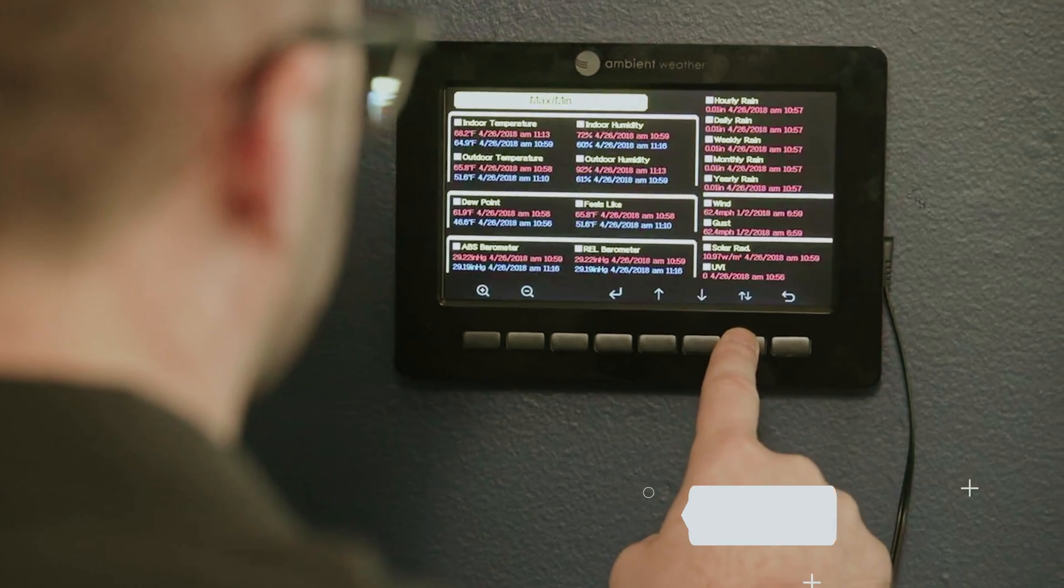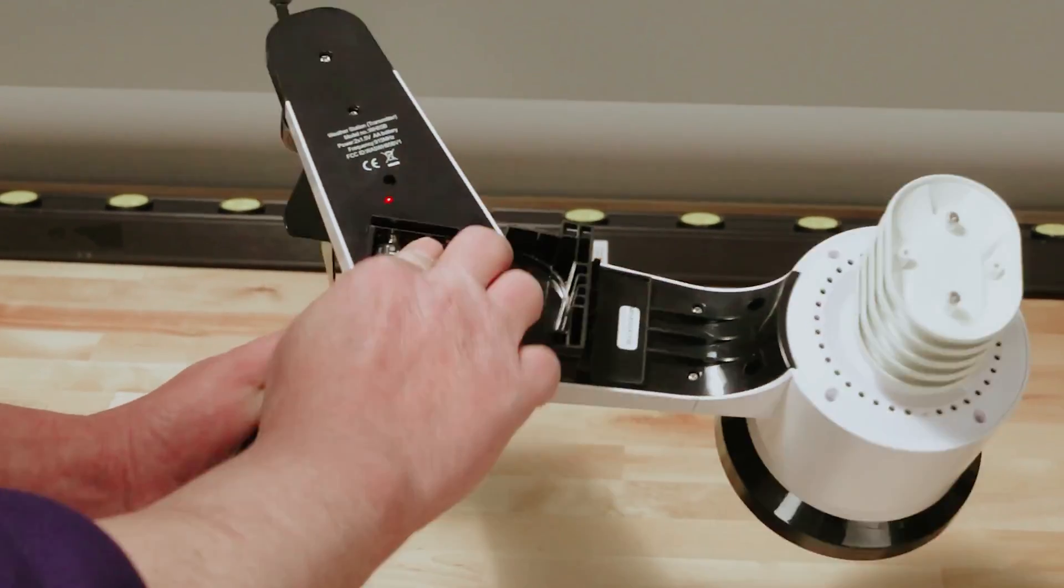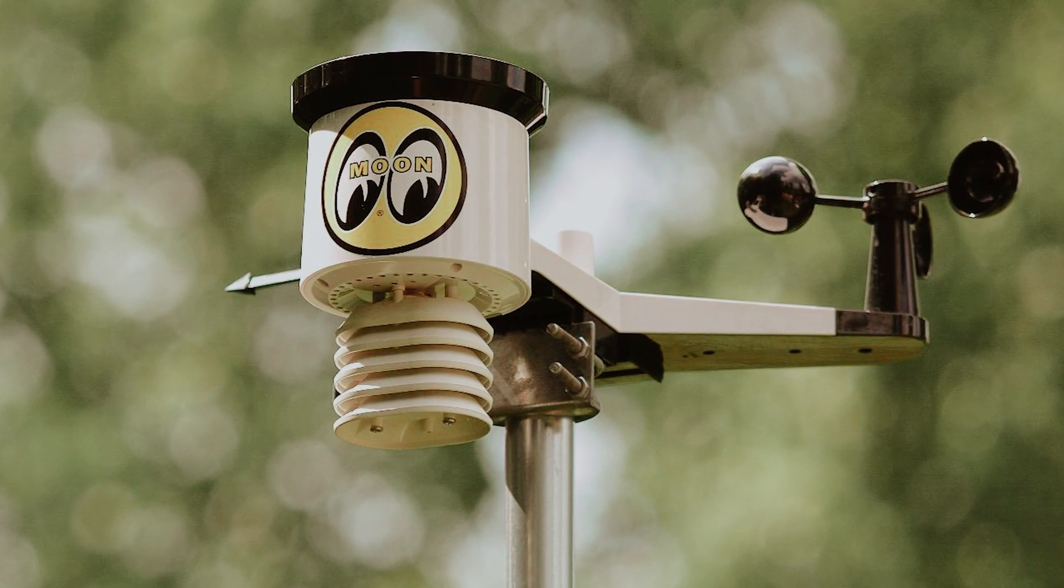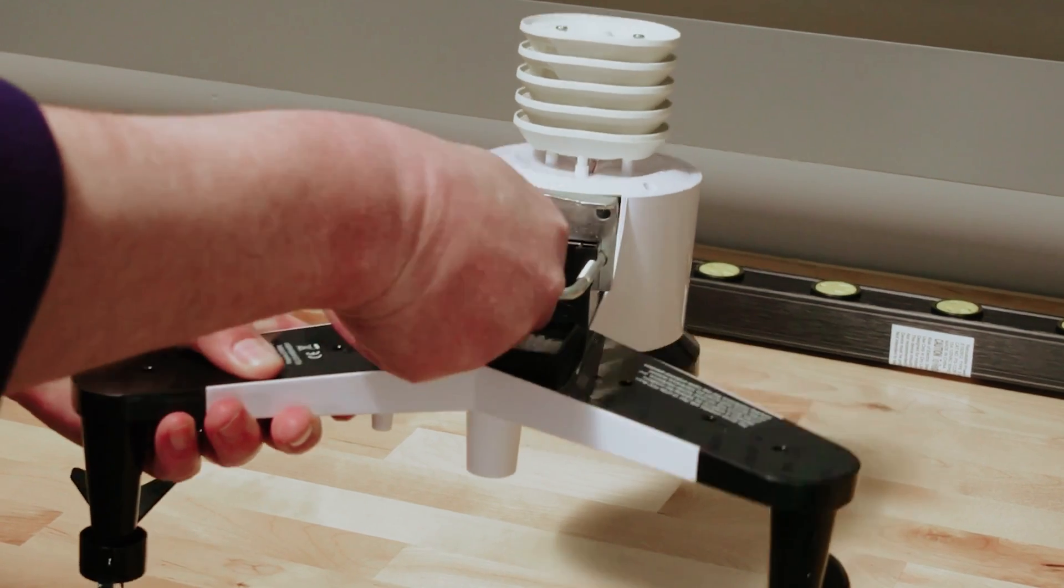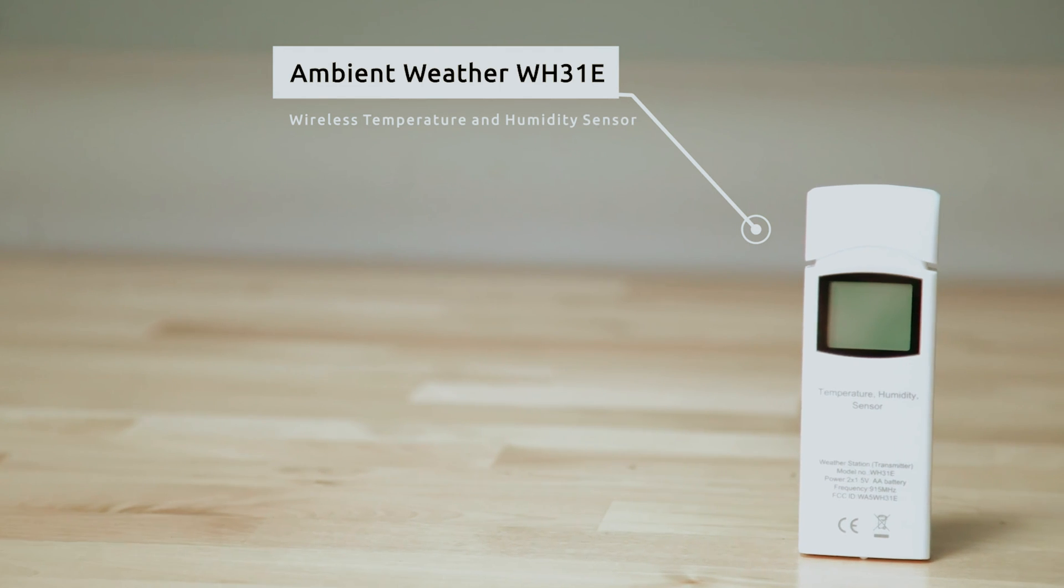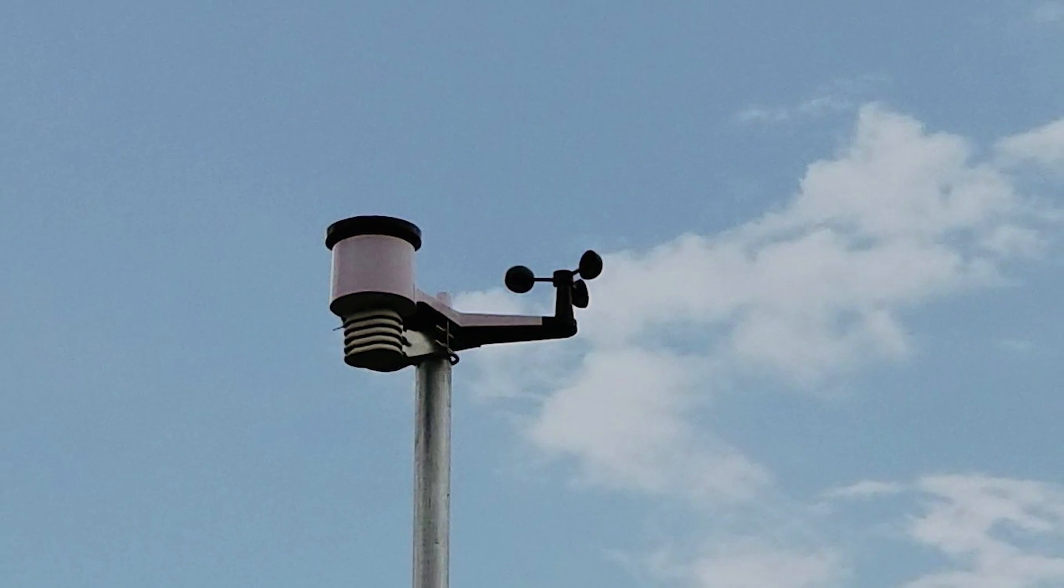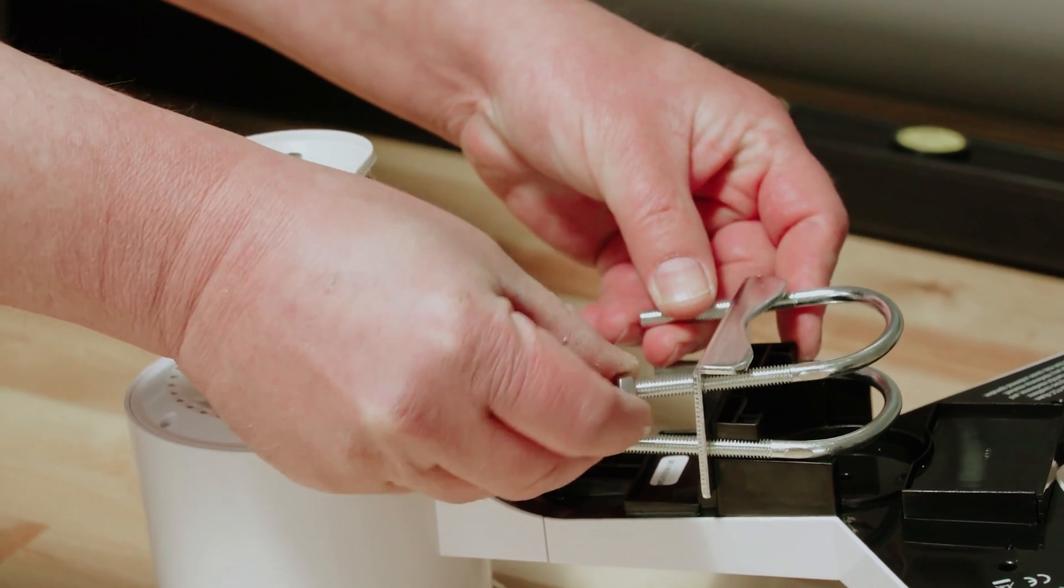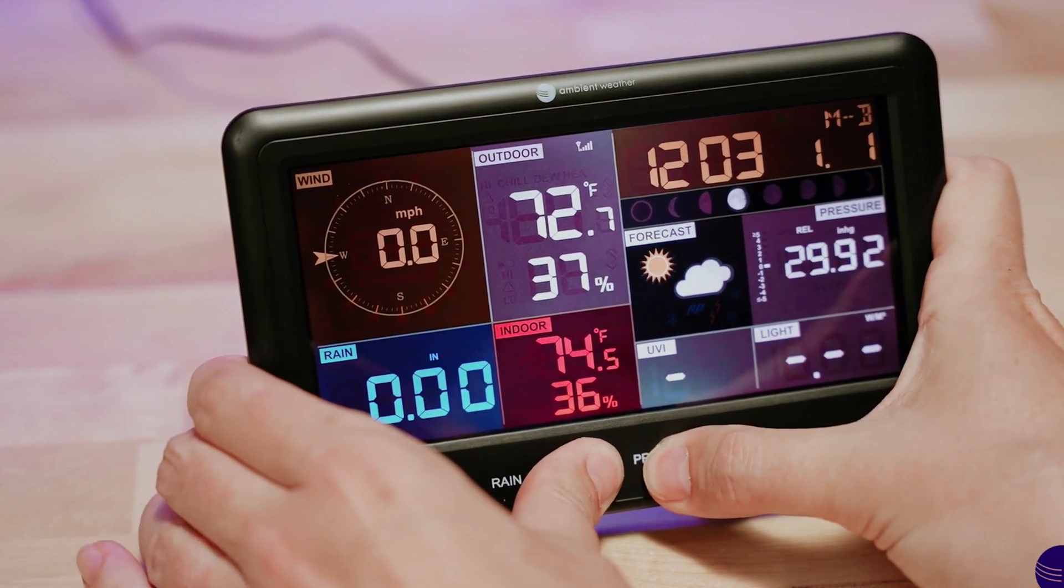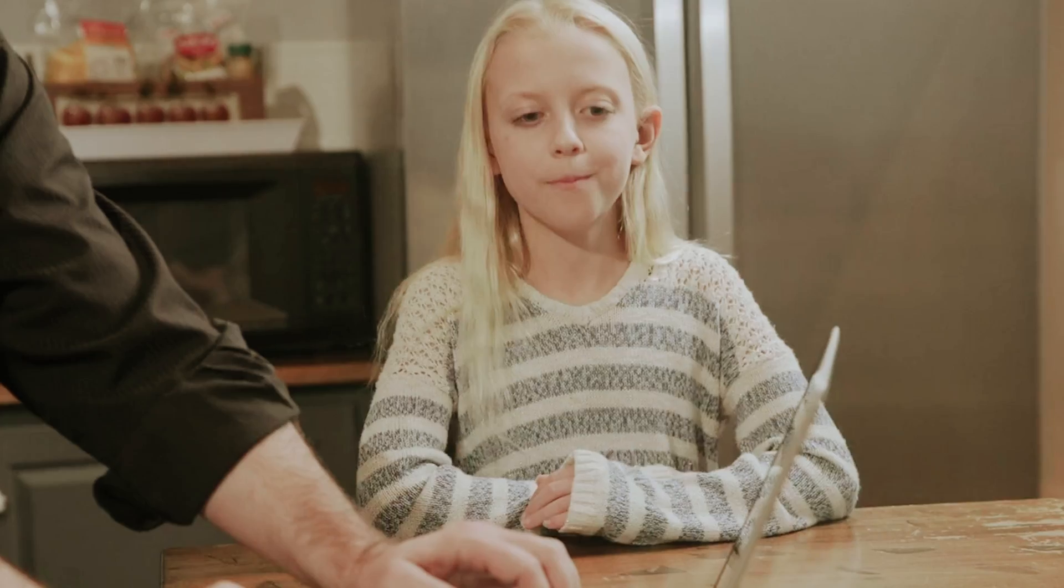While the WS2902 doesn't include lightning detection like the Weatherflow Tempest, it compensates for this with an impressive range of features at a lower price point. Many users have found the accuracy of its sensors to rival those of more expensive options, making it an excellent choice if you're on a budget. Yes, it's true that the unit isn't expandable and requires batteries for the sensor suite, but considering the value you receive, these minor drawbacks may not outweigh the benefits for you. By choosing the Ambient Weather WS2902, you'll have access to reliable and precise weather data without breaking the bank. Whether you're a hobbyist or someone who simply wants to stay informed about the weather conditions around you, this weather station can enhance your daily life.